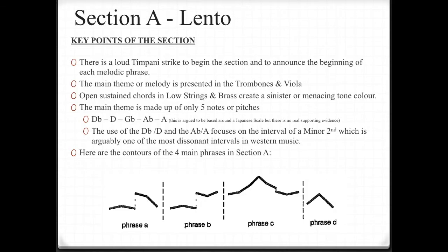Section A — the lento. Here are some key points of the section. There's a loud timpani strike to begin the section and to announce the beginning of each melodic phrase. The main theme, or melody, is presented in the trombones and the viola. Open, sustained chords in the low strings and brass create a sinister or menacing tone colour. The main theme is made up of only five notes or pitches: Db, D, Gb, Ab, and A. There is an argument that it is based around a Japanese scale, but there's no real supporting evidence to this.